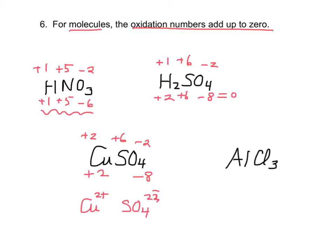Over here, aluminum is +3. So each one of these chlorines is -1, because I have a +3 and a -3. So they have to add up to zero.